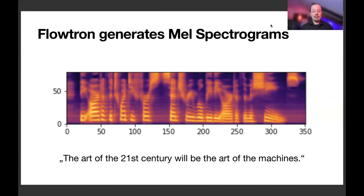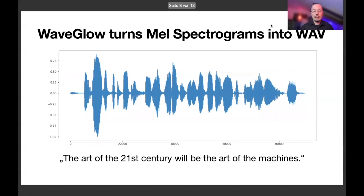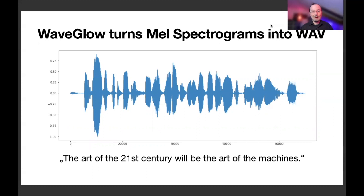In order to make it audible — to actually hear what the neural network is saying — we still have to do one tiny little step, and this is using WaveGlow. WaveGlow is, I would almost say, a sibling of Flowtron. It takes mel spectrograms and maps them to WAV files — a representation that you can actually hear. And if you have WAV files, you can immediately drag them into your audio workstation and integrate those vocals into your sounds.